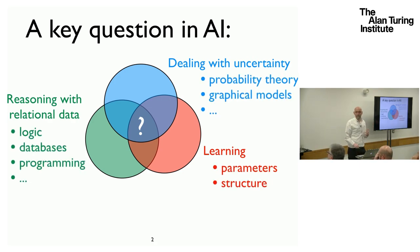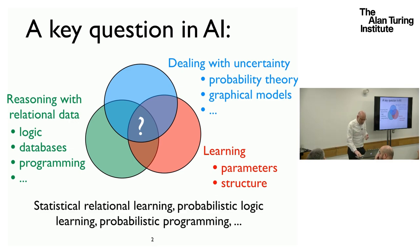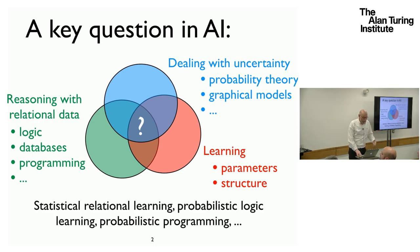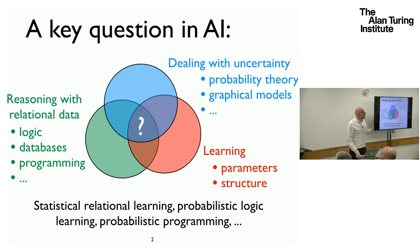We've seen this in different fields. The logic reasoning comes from KR, the probabilistic reasoning from the UAI community, and the learning from the machine learning community. Today, this combination is addressed in areas such as statistical relational learning, probabilistic logic programming, and probabilistic programming without logic. I'm first going to introduce the motivation for this, give a couple of examples, and then go into the basic formalism and develop some further ideas.